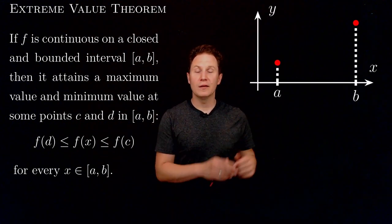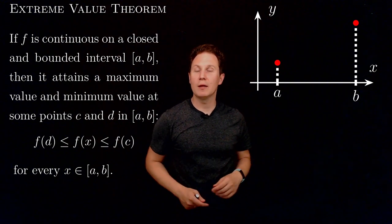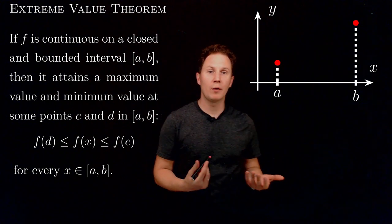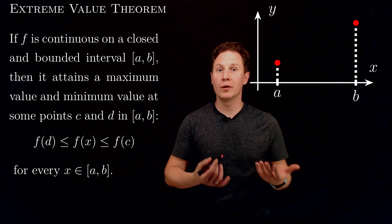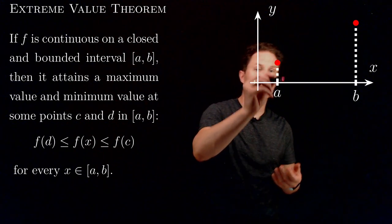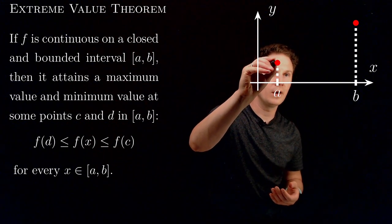To illustrate this, here I have a closed interval a, b. The point is that no matter how I try to draw the graph of a continuous function connecting these two red points, I will be guaranteed by the Extreme Value Theorem that there will be at least one point between a and b.